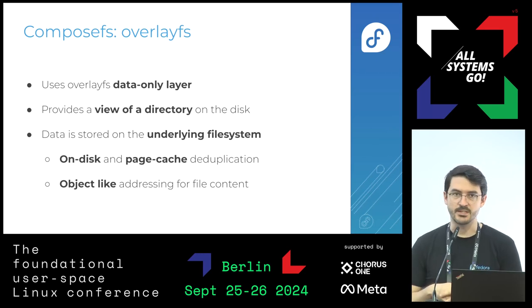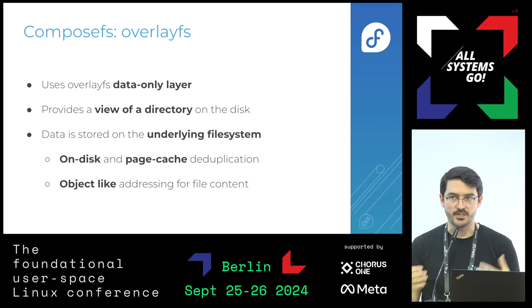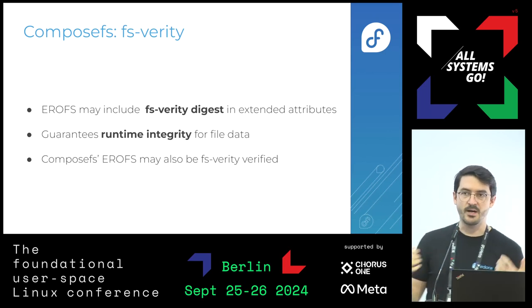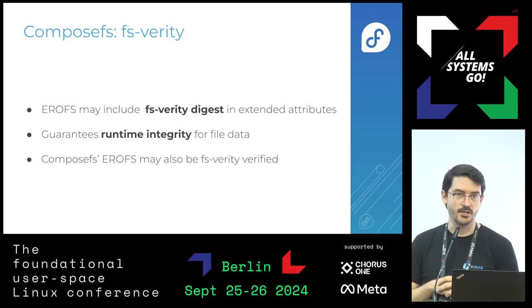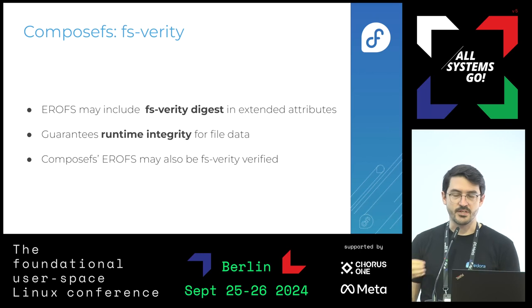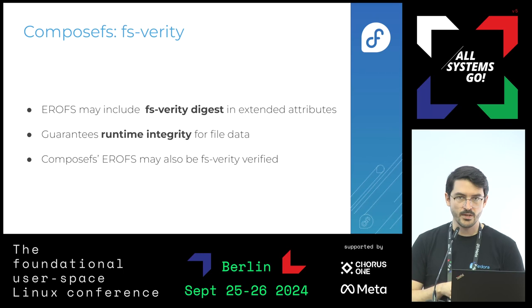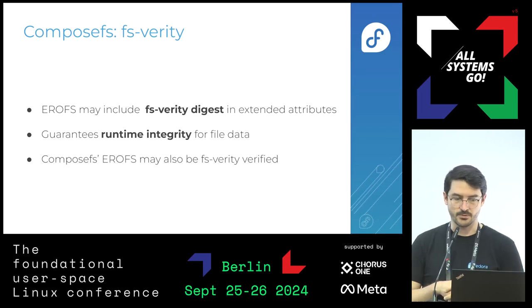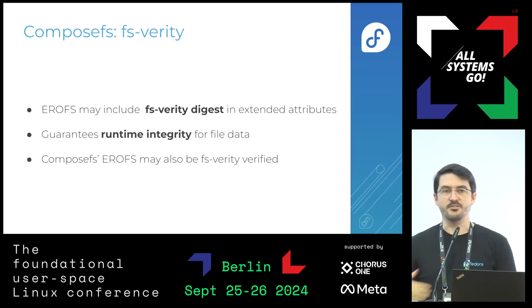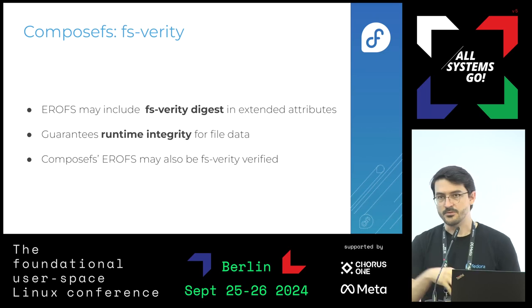To get the full integrity story, we can combine this with FSVerity. The idea behind FSVerity is that you can ask the kernel to make files read-only and compute a hash of the content of the file. With ComposeFS, we can include this FSVerity hash of the files inside the EROFS blob directly in the extended attributes. This guarantees us full integrity for the file data on disk, just by looking at a single EROFS blob — the real filesystem from ComposeFS. This EROFS filesystem itself can be FSVerity hashed, so that you get the full story.